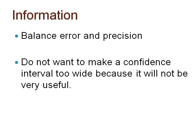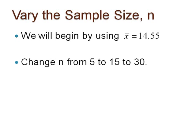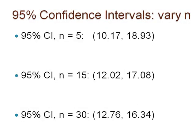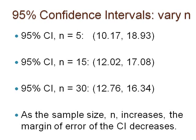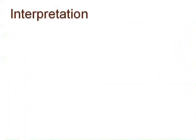Now let's see what happens to the margin of error as we change the sample size and hold the other variables constant. Begin by using the sample mean obtained from a sample of size 30 from the weights example, x-bar equals 14.55. Then change the sample size n from 5 to 15 to 30, assuming we obtained the sample mean of 14.55 from each of these samples. Pause here to calculate three 95% confidence intervals using different sample sizes and consider what is happening to the margin of error as the sample size increases. Here are the results. Notice that as the sample size n increases, the margin of error and the width of the confidence interval decrease. Here is the graph displaying the three confidence intervals. We can reduce the margin of error without giving up any confidence in our interval capturing mu by taking a larger sample.